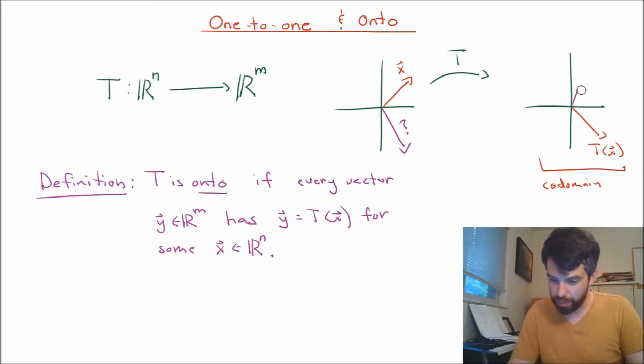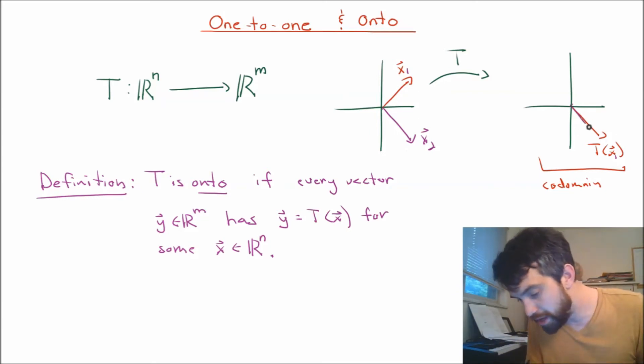I'm going to ask a different question. We know that x goes to T(x). But it could also be that we have some other vector. Maybe I'll call the first one x1, and now I'll call this one x2. It could be the case that the transformation on x2 is the exact same thing as the transformation on x1.